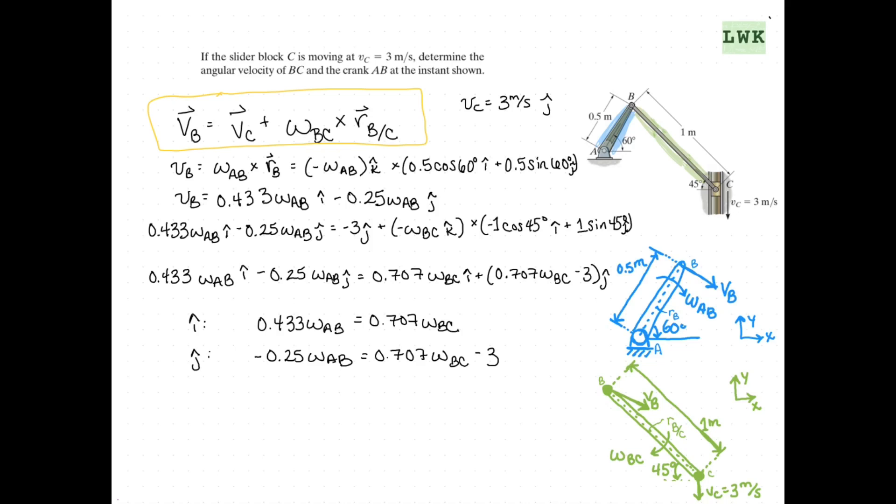Solving for this is going to give us omega AB value of 4.4 radians per second and an omega BC value of 2.7 radians per second. So this is going to be our final answer.